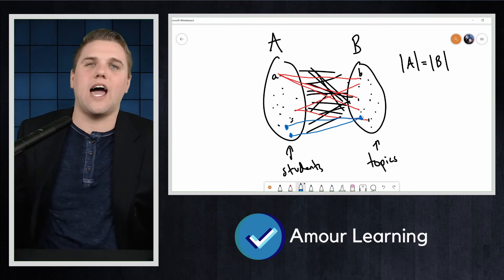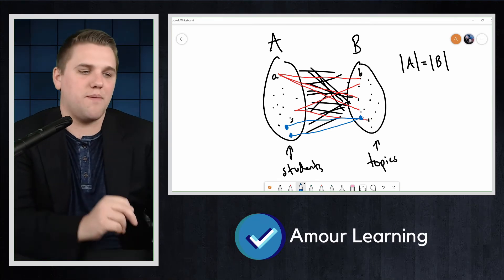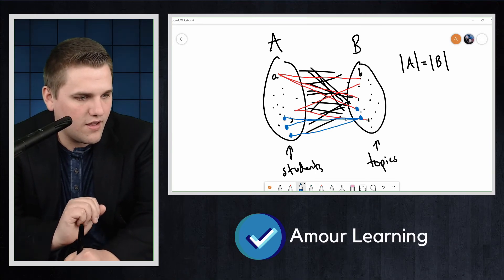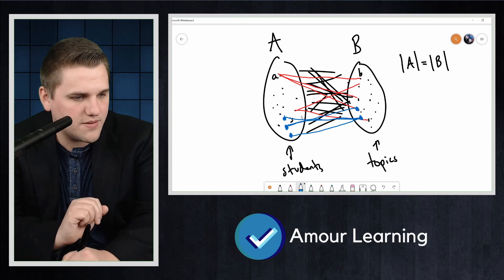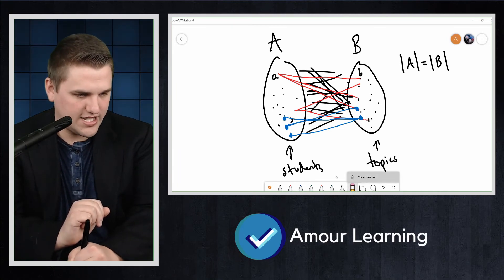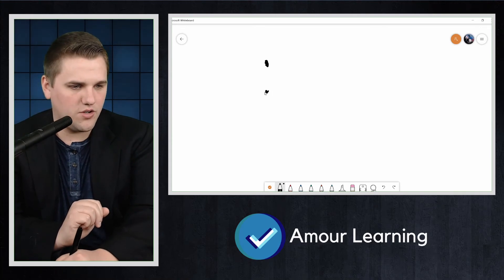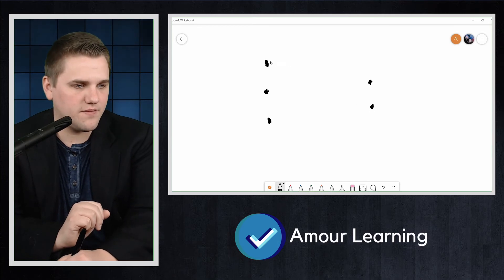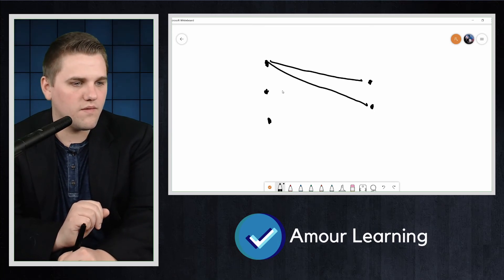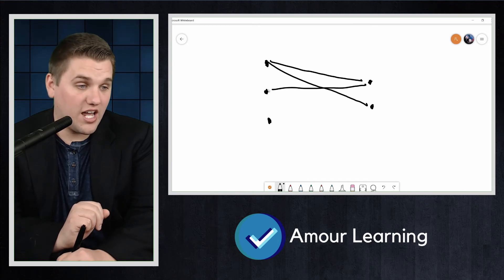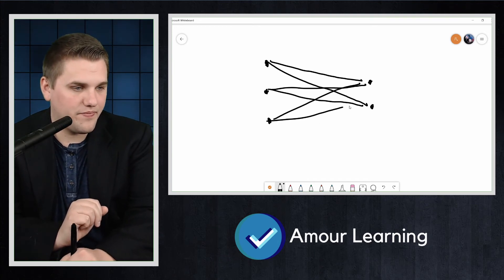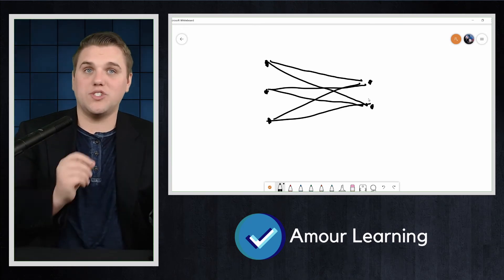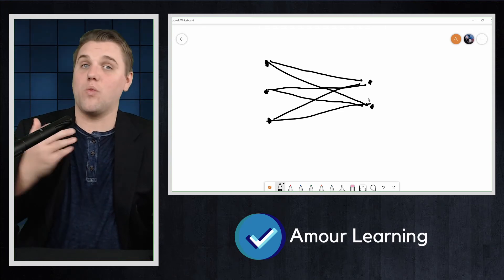Or what if three students like only two topics between them? So maybe we have three students and they each like these two topics. And let me, to make this a little bit less convoluted, let's say we had three students and they all like two topics. Well, this is going to cause a problem. Again, after assigning one student a topic, we reduce this down to a previous case of two students liking only one topic.